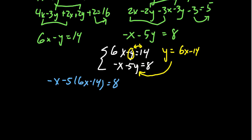Distribute that negative 5. You're going to get negative x minus 30x plus 70. And this, of course, is equal to 8. Combining like terms, negative x and negative 30x will come together to give us negative 31x. When you move the 70 to the other side, you're going to get 8 minus 70, which is equal to negative 62.